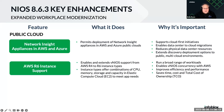Another announcement is AWS R6 instance support. Instance types are really a combination of CPUs, memory, storage, and capacity in AWS's Elastic Compute Cloud. This is important because it meets organizational high-memory application needs. We're extending VNIOS support from what we had before — AWS R4 — and now we're supporting R6 instances. It gives you the chance to run a broader range of workloads, maintains concurrency with what AWS is running, and is much more efficient and higher performing, especially from the perspective of saving cost and lowering your overall total cost of ownership.